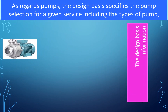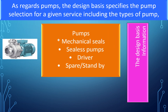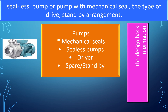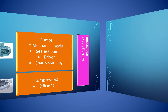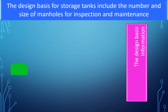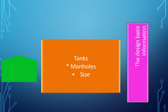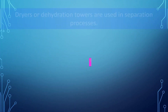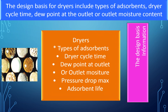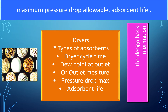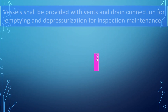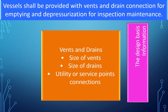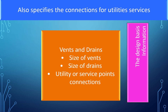For pumps, the design basis specifies pump selection for a given service, including the type of pump (sealless or with mechanical seal), type of drive, and standby arrangements. For compressors, efficiencies are specified. The design basis for storage tanks includes the number and size of manholes for inspection and maintenance. Dryers and adsorbers used in separation processes have design basis covering types of adsorbents, dry cycle time, dew point at outlet or outlet moisture content, maximum allowable pressure drop, and adsorbent life. Vessels shall also be provided with vents, drain connections, and utility service connections.